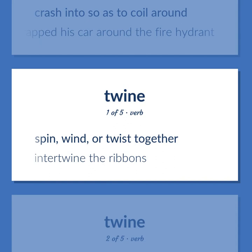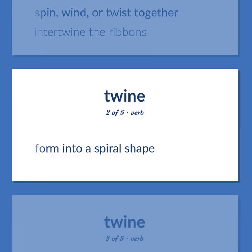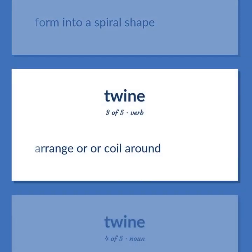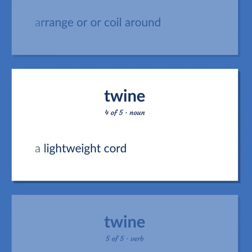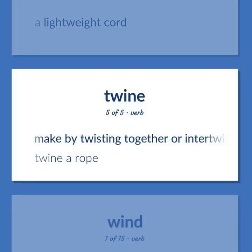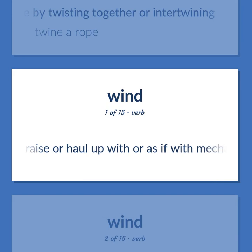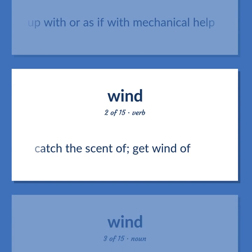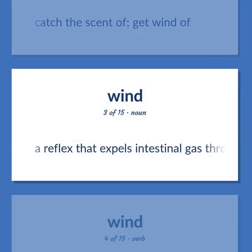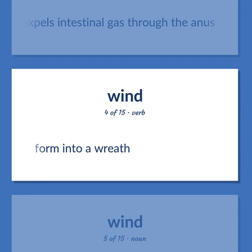TWINE: Spin, wind, or twist together — intertwine the ribbons. Form into a spiral shape. Arrange or coil around. A lightweight cord. Make by twisting together or intertwining — twine a rope. Raise or haul up with or as if with mechanical help. Catch the scent of; get wind of. A reflex that expels intestinal gas through the anus. Form into a wreath.